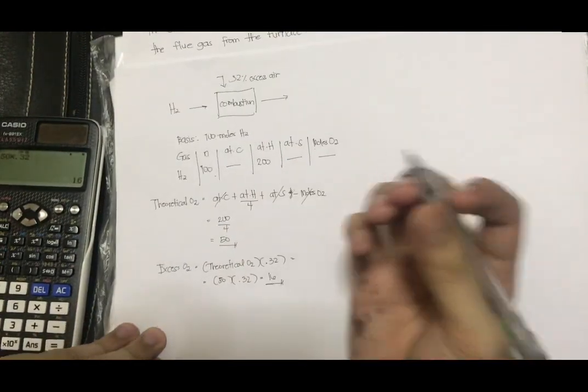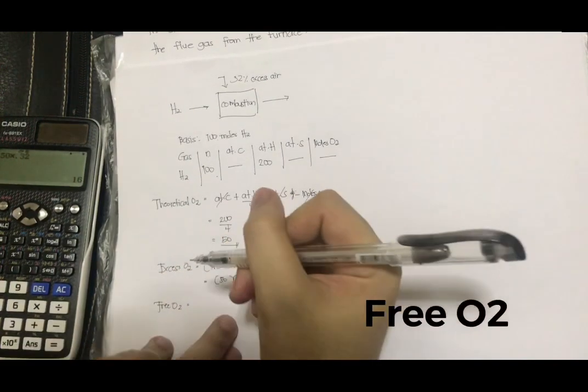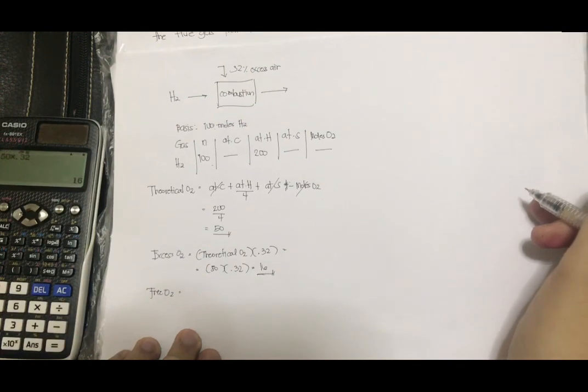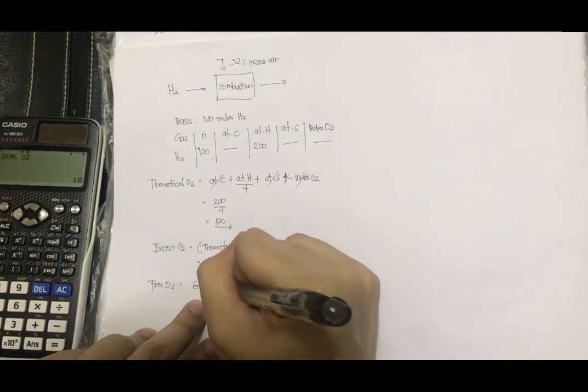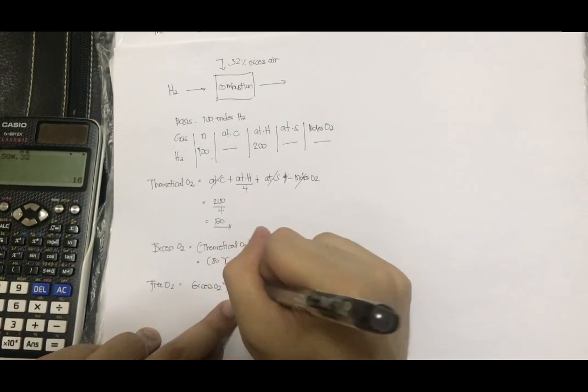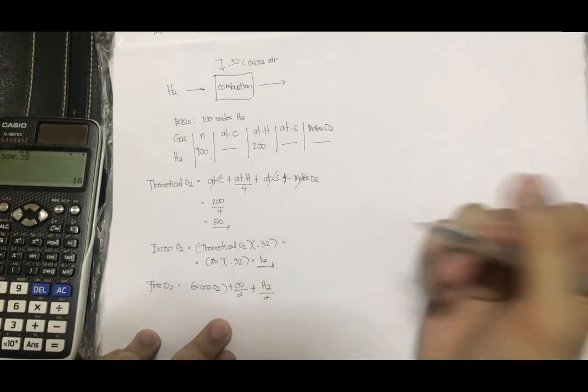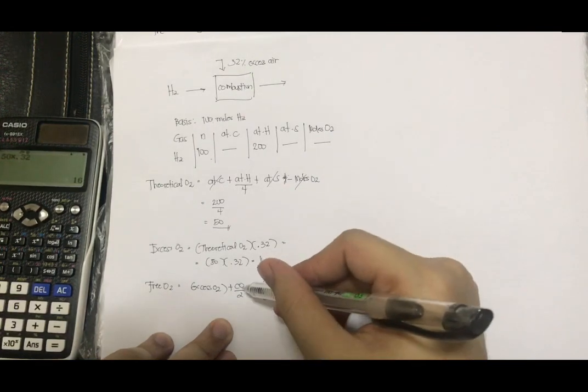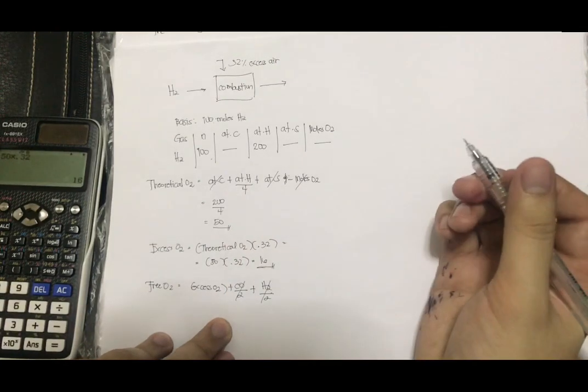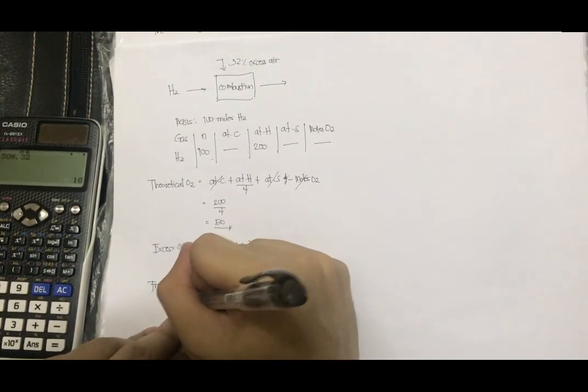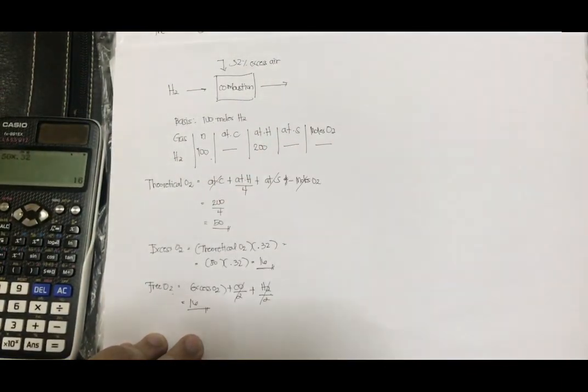Next is the free O2. The formula for our free O2 is just simply excess O2 plus CO over 2 plus H2 over 2. Since we don't have CO or H2 in our given fuel, let's just cancel that out. What remains is our excess O2, which is 16. So it's the same as our excess O2 and free O2.